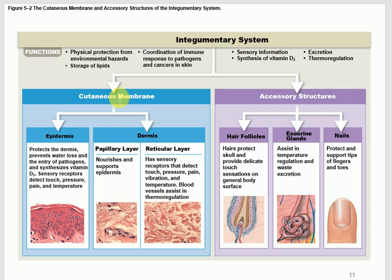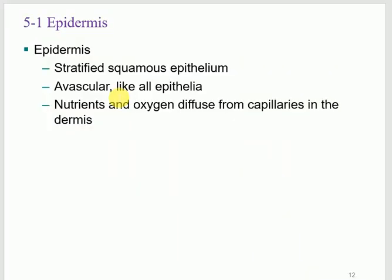The whole system is the cutaneous membrane: the skin with its two parts — the epidermis (outer) and dermis (inner). The dermis itself has two sublayers: the papillary layer on top and the reticular layer below. We will also discuss hair, glands, and nails. The epidermis is made of stratified squamous epithelium. Stratified means layers, and squamous means flat.